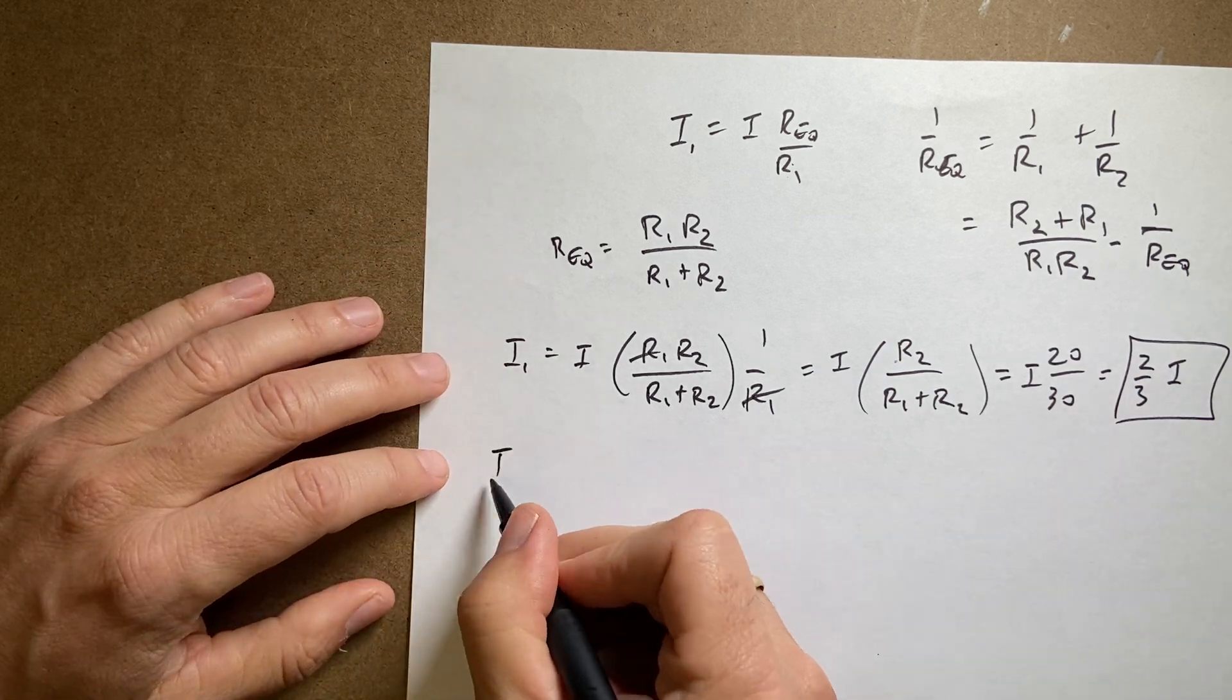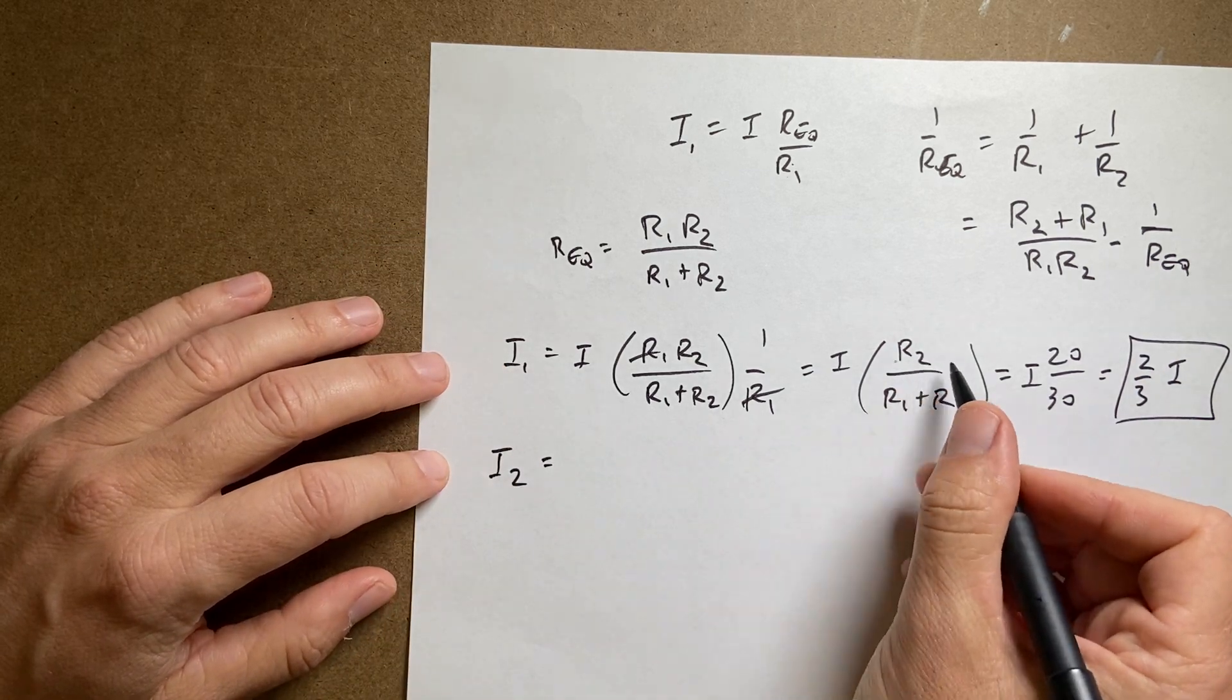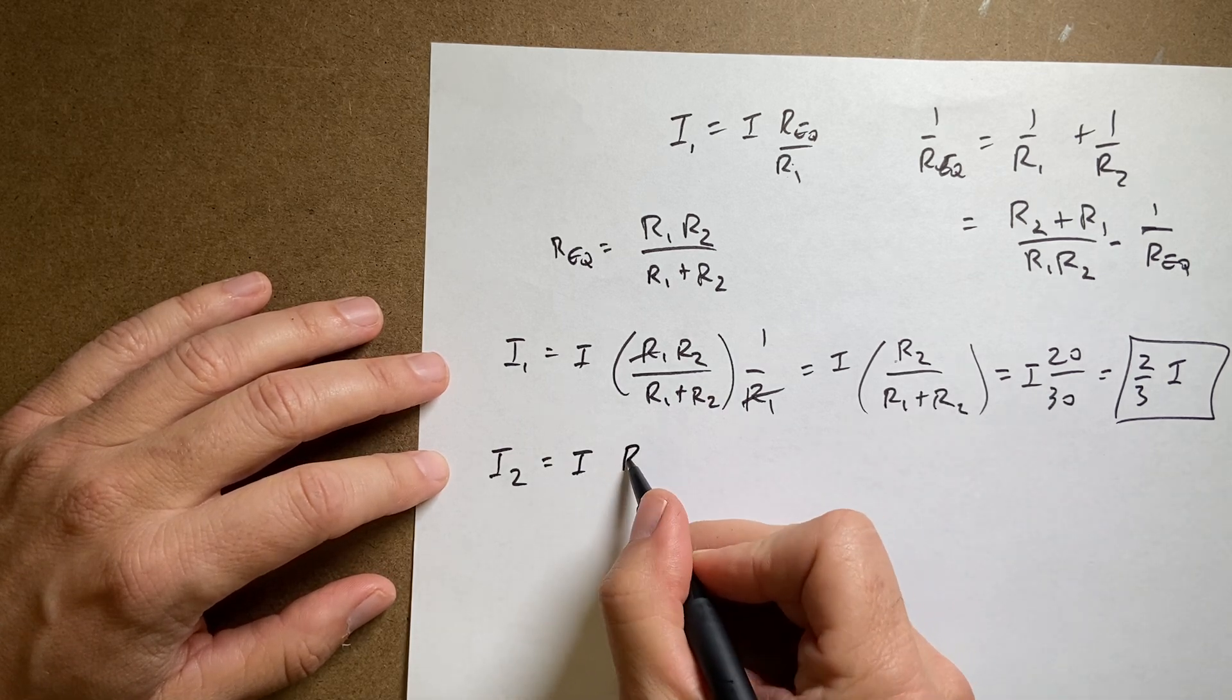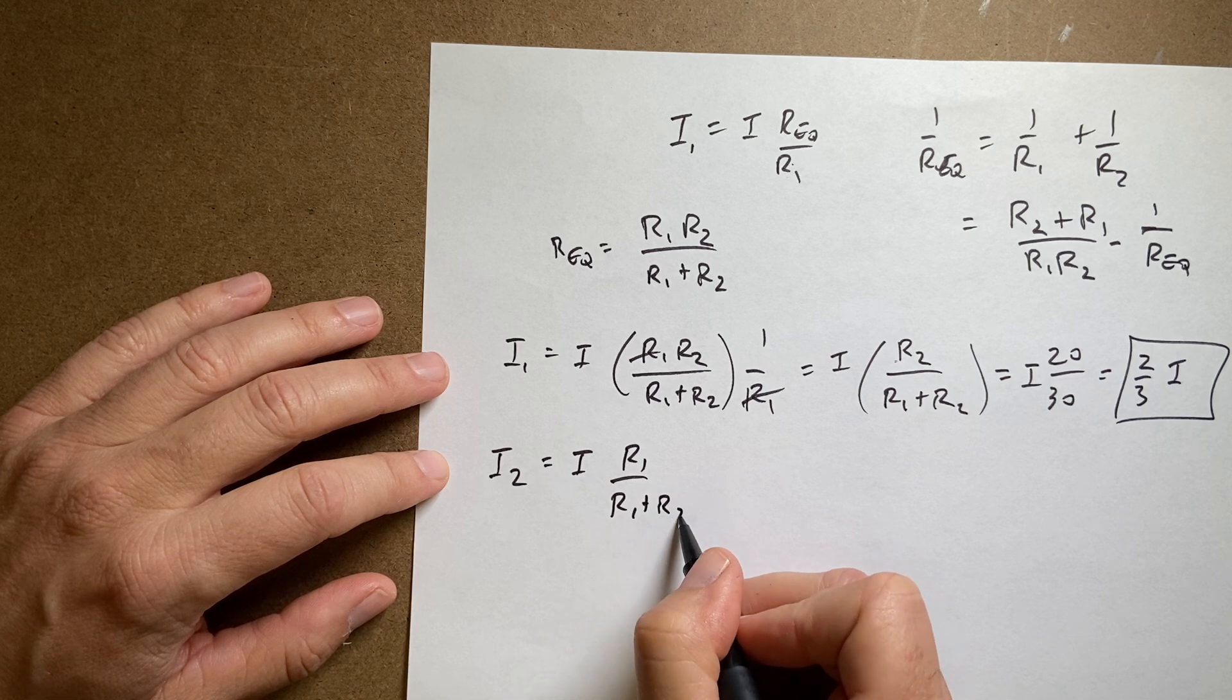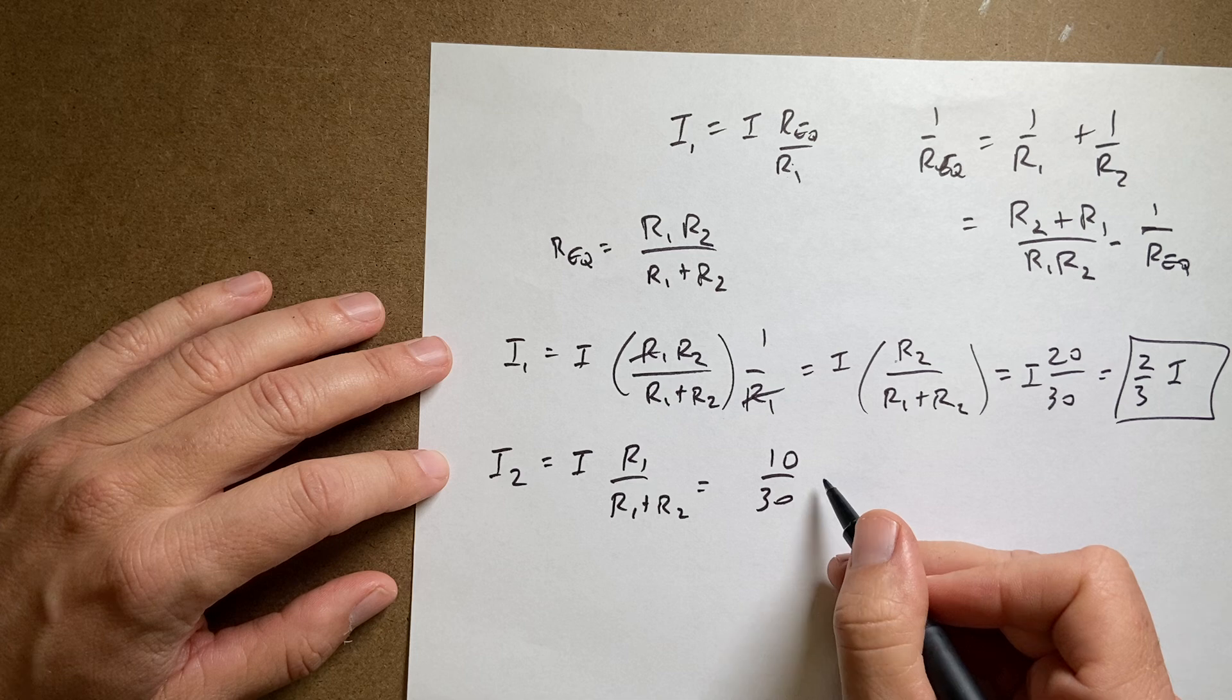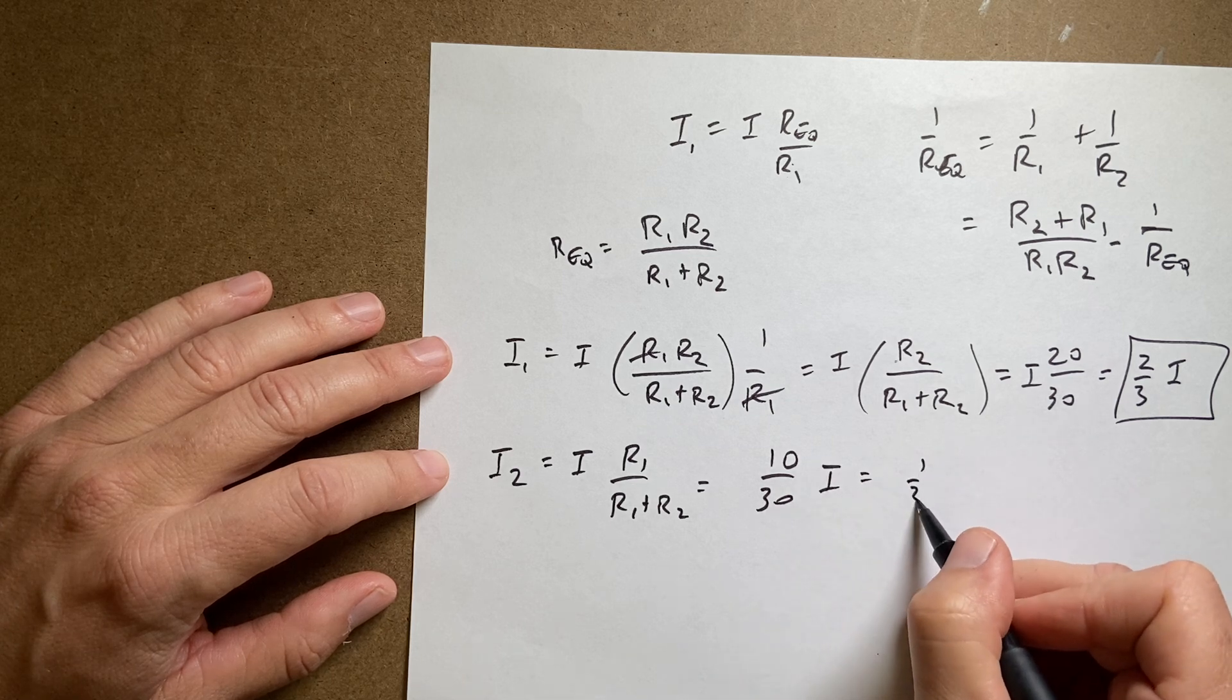Now if I do it for I2 everything is the same except I'm going to switch the R1 to R2. So I get I times R1 over R1 plus R2. And that's going to be equal to 10 over 30 I, or one third I.